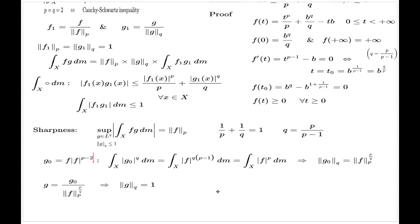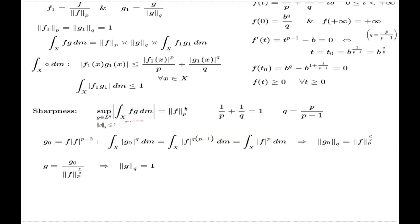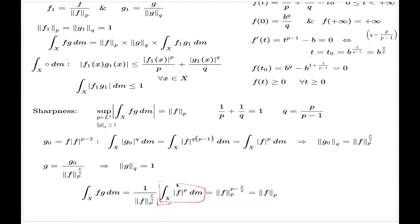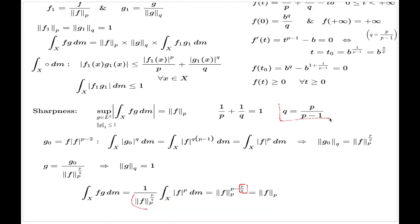All I have to argue is that the left-hand side — the integral of f times g — delivers the LP norm of f. When I substitute my g function, I have the denominator, which is the LQ norm of g0, outside the integral as a number. The integrand g0 times f delivers f to the power p. This value is the LP norm to the power p. Subtracting the denominator and referring to the identity, this is just the LP norm of f — exactly the right-hand side.